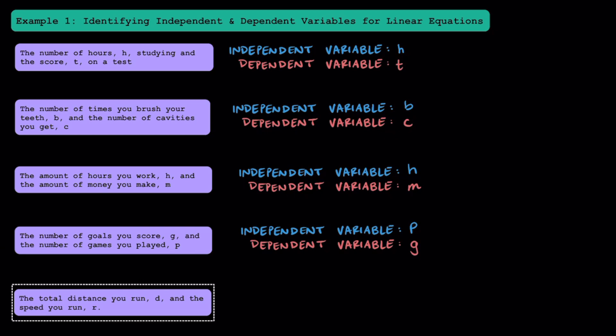The total distance you run, D, and the speed you run, R. Does your distance depend on your speed, or does your speed depend on the distance? In this scenario, the distance is going to depend on your rate. If you think about two people with the same amount of time, the person who runs at a faster speed is going to be able to cover more distance. Here we can say the distance depends on how fast you're going, or the rate.